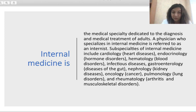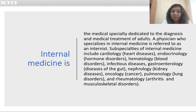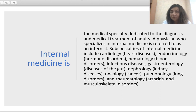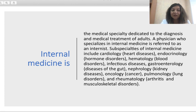What is internal medicine in general? It is a medical specialty dedicated to the diagnosis and medical treatment of adults. A physician who specializes in internal medicine is referred to as an internist. Sub-specialties of internal medicine include cardiology (heart/cardiovascular disease), endocrinology (hormone disorders), hematology (blood disorders), infectious disease, gastroenterology (diseases of the gut), nephrology (kidney problems), oncology (cancer problems), pulmonology (lung disorders), and rheumatology (arthritis and musculoskeletal disorders). All these sub-specialties — each one is very large, very difficult, and very important — are all included in one of the biggest disciplines and biggest sciences in medicine: internal medicine.